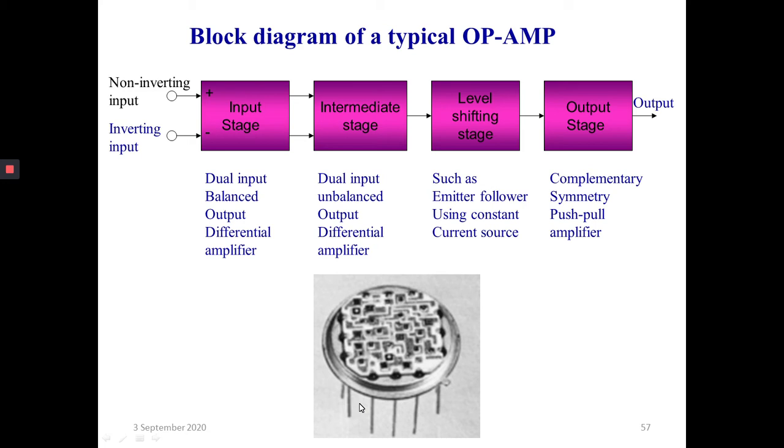Now what is the function of the first stage, the input stage? This is the dual input and balanced output stage, as we can see two inputs and two outputs. This stage provides most of the high voltage gain of the amplifier, so maximum part of the gain that is at the output is already amplified in this input stage. It also establishes high input impedance.